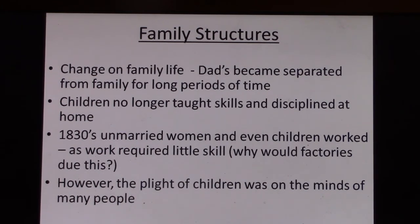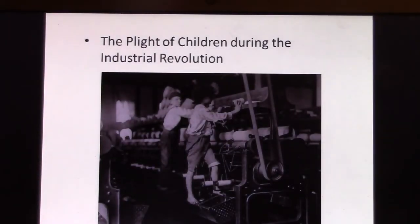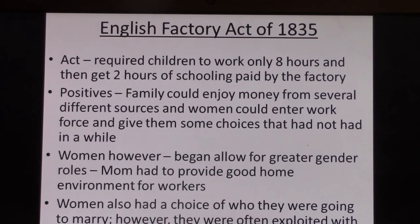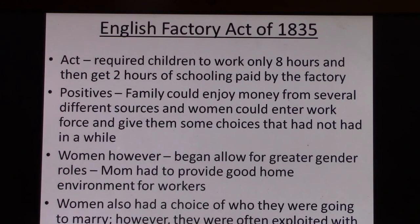By 1830, most textile production — weaving cotton and wool into fabric — is done in a factory by machines that require workers with little or no skill. With fathers gone up to 12 to 14 hours a day plus commute, kids are no longer getting education or discipline at home. Moms have to do the work of both parents. Some poor families send their children to work in factories as well for extra income, leading to the well-documented problem of child labor during the Industrial Revolution.